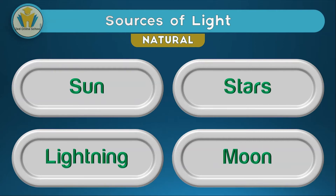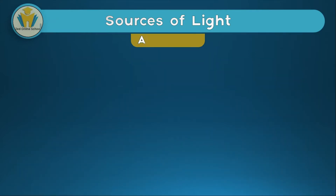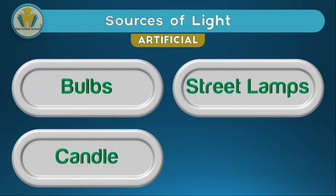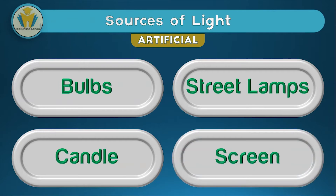As you can see, no one really makes the sun emit its light, no one makes the stars have light. The same applies to lightning and the moon. Now if we take a look at artificial sources of light, which are those sources of light that are man-made, apart from the candle, we can see that the rest of the artificial sources of light really need something dealing with electricity.